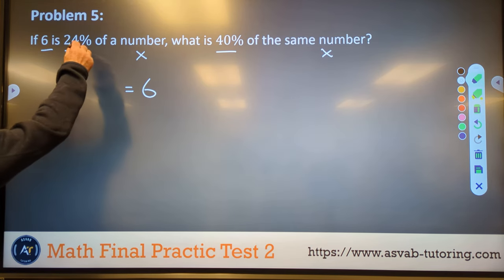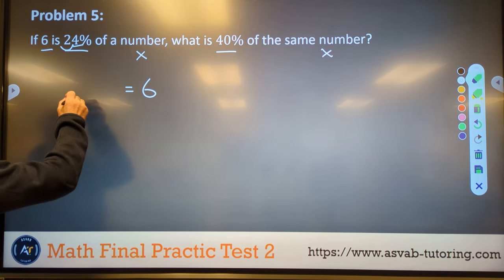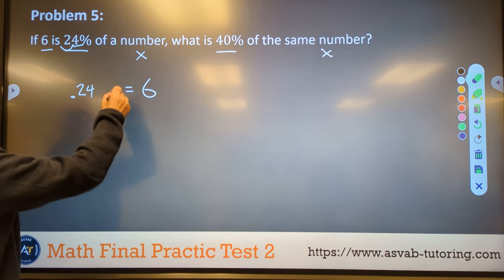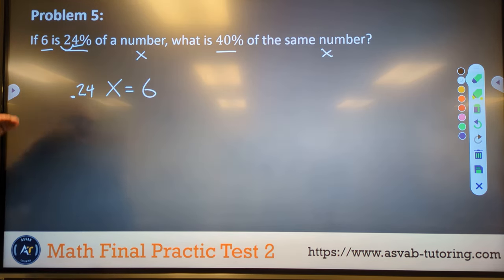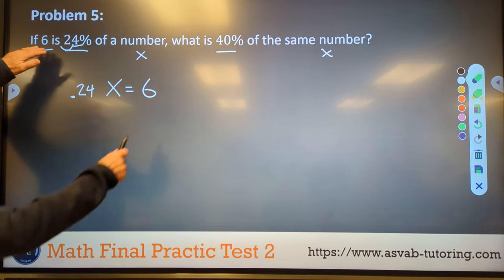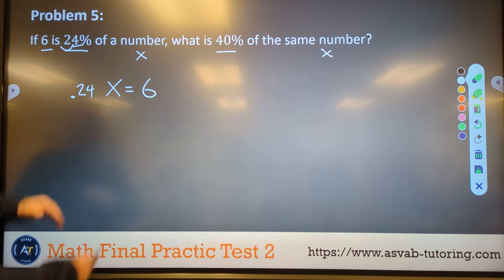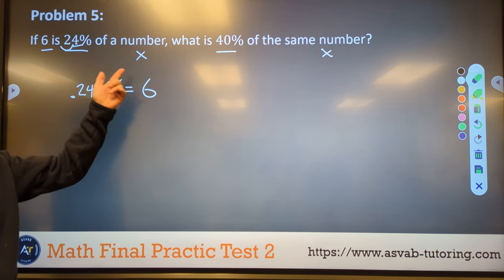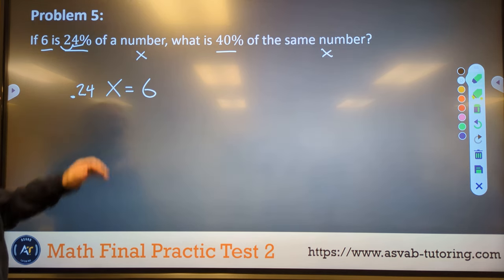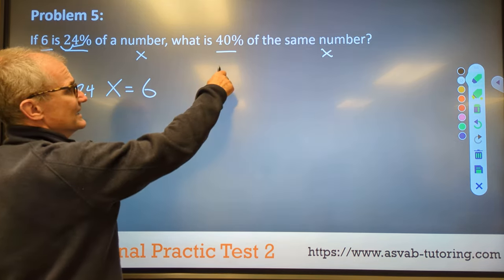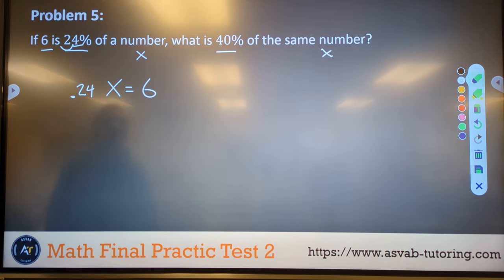First thing I'm going to do is take this percent, convert it into a decimal. I'll go over one, two. So I'm saying 24% is 0.24 of a number. I don't know what that number is. I'm going to call it x is six. So if six is 24% of a number. So here's my first equation. That's how I'm going to get x. Then once I have that x, I'm going to find 40% of that x to find my solution.